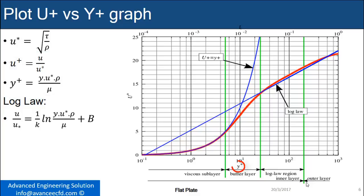One term is non-dimensional distance, and the other is non-dimensional velocity. In the viscous sublayer, Y+ equals U+, and it's observed for Y+ less than 5.